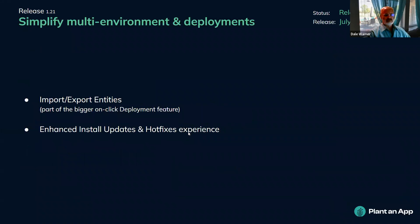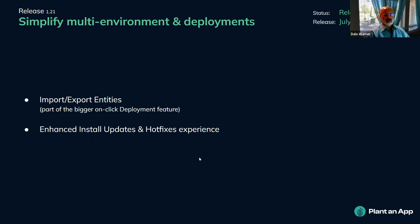Product roadmap updates: we are currently on version 1.21, which is all about simplifying the multiple environment scenario and deploying in a multi-environment scenario. This is a first step to import and export entities, which was released yesterday, July 5th. If you're on version 1.20, you should see it on the release channel on the updates tab. We're also updating the updates tab interface, though the old one is still there while we give it the right number of miles before removing it.